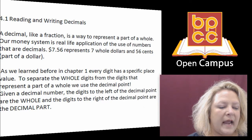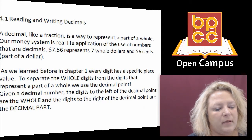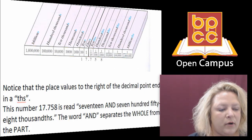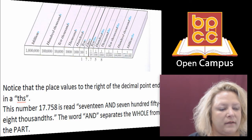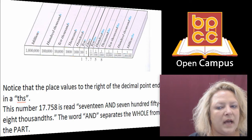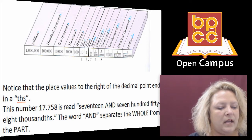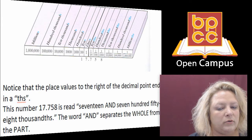The word 'and' represents the decimal point. So when you're talking about place value, you have seventeen — and the decimal point represents the word 'and' — seven hundred fifty-eight thousandths. Notice that everything behind the decimal point ends in T-H-S. Those are parts of a whole. The numbers to the left of the decimal point end in S because those are all whole numbers.